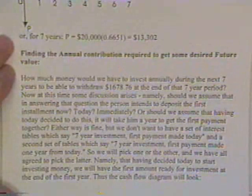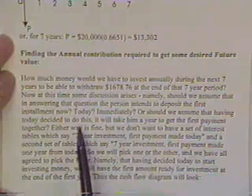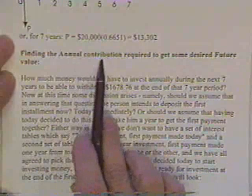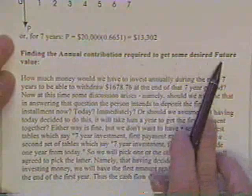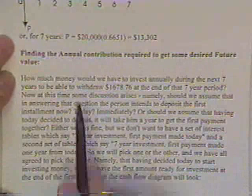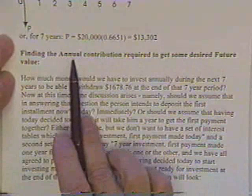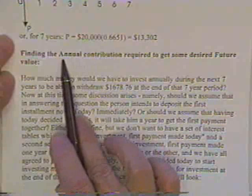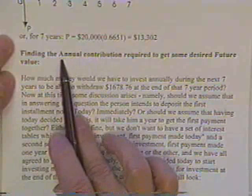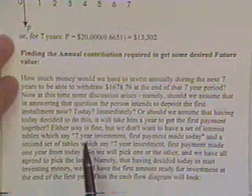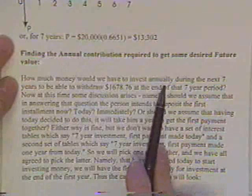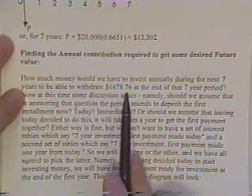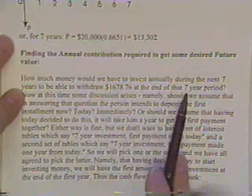Now, another often done operation is finding how much you have to put in the bank each month or each year in order to get some desired future value. A lot of people call that an annuity; some people call it an annual amount or an annual contribution. They all have the letter A, and so we use the symbol A to denote an annual amount. For example, how much money would we have to invest annually during the next seven years in order to be able to get sixteen thousand seventy-eight dollars and seventy-six cents at the end of that seven year period?